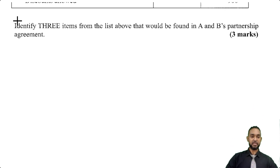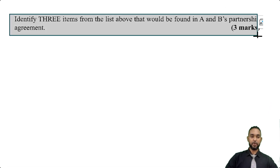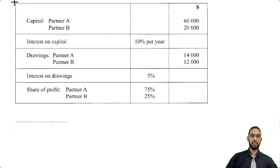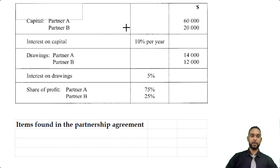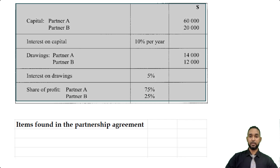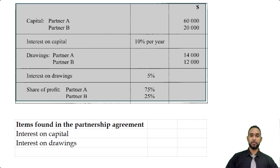The first thing they want us to do is identify three items from the list above that would be found in A and B's partnership agreement. That's relatively easy — we go back up to the first half of the table and pull out: the interest on capital, the interest on drawings, and the profit sharing ratio. And that's it for part A.